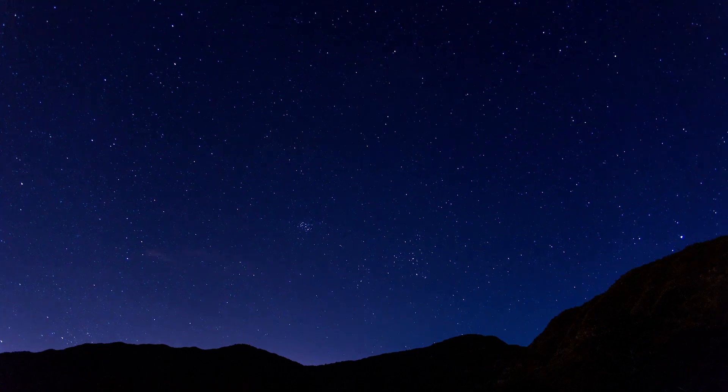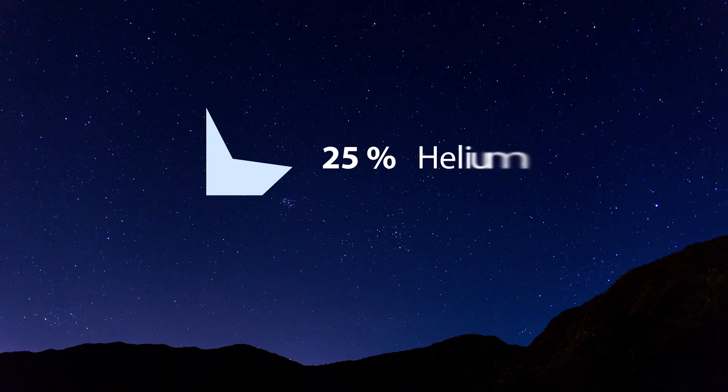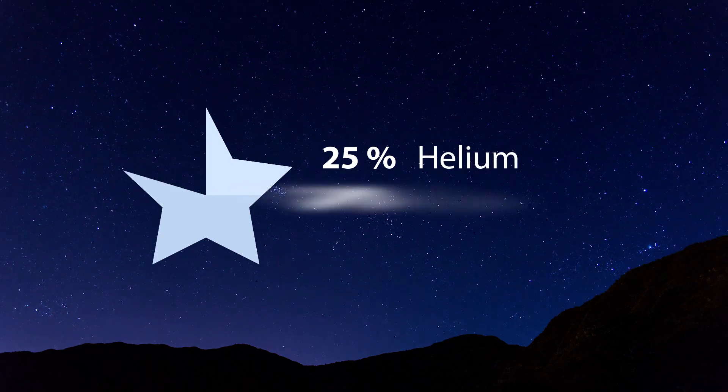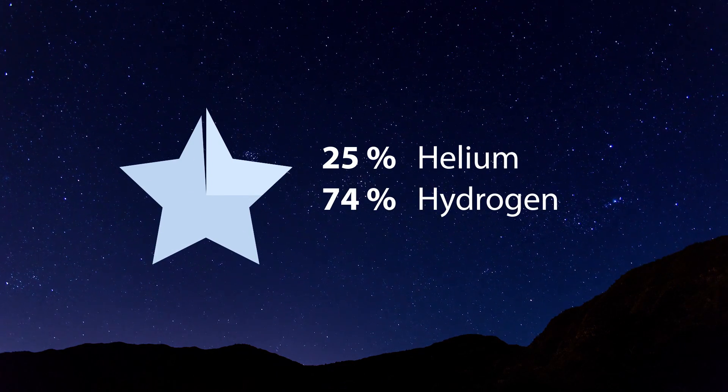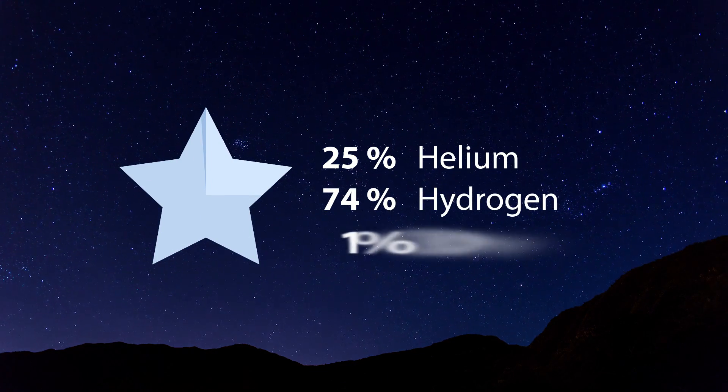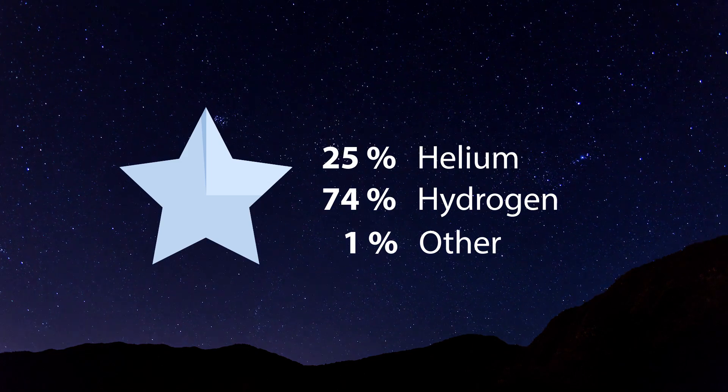Now I myself, I'm roughly 15 kilograms of carbon. In a star, the proportion of chemical elements is totally different. A star is made of 25% helium, 74% hydrogen, and only 1% of all other chemical elements.